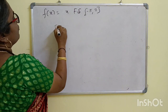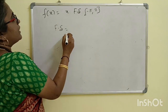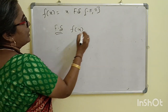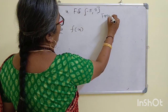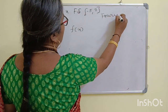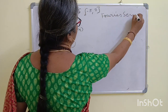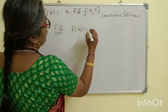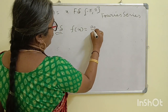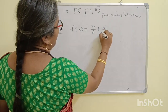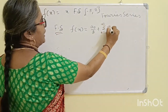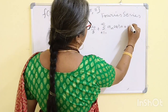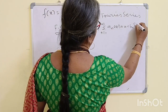The Fourier series is a formula. F(x) equals the Fourier series. The Fourier series formula is: f(x) = A0/2 + summation n varies from 1 to infinity of An·cos(nx) + Bn·sin(nx).